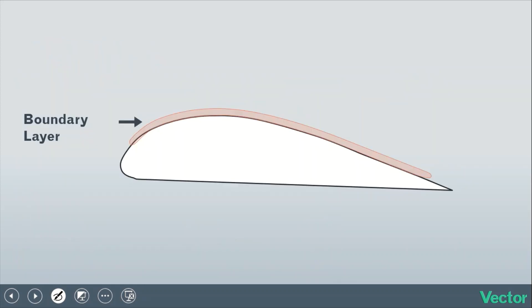The boundary layer is usually very thin, usually no thicker than the thickness of a credit card, but it can change. The important thing to understand is that because air follows the boundary layer, the boundary layer forms the effective shape of the airfoil.